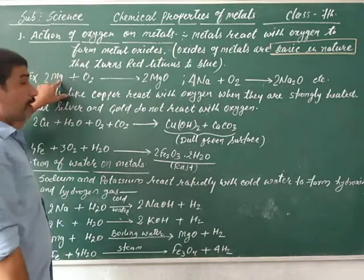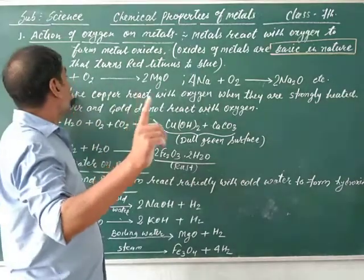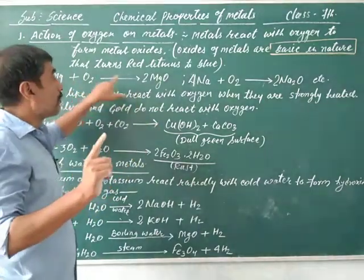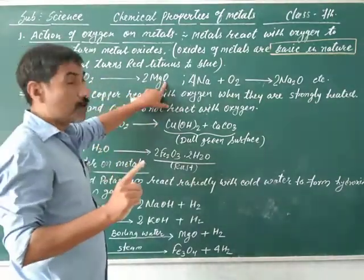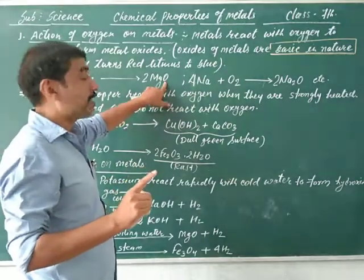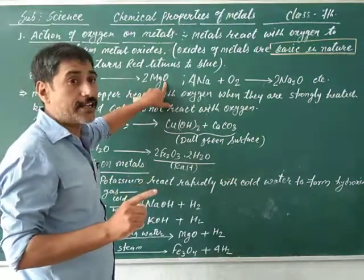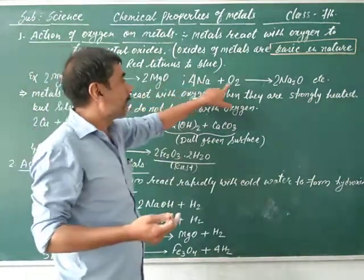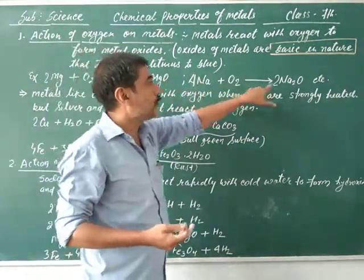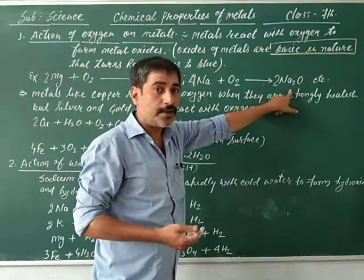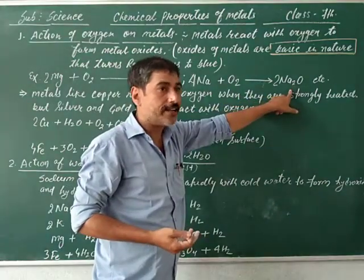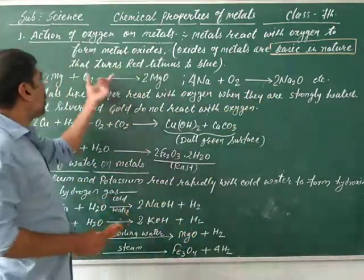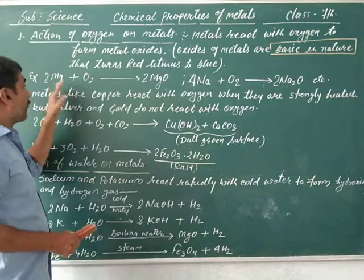For example, magnesium is a metal. It reacts with oxygen to form metal oxide — magnesium oxide. Same as sodium reacts with oxygen to form sodium oxide. This is the reaction of metals with oxygen.